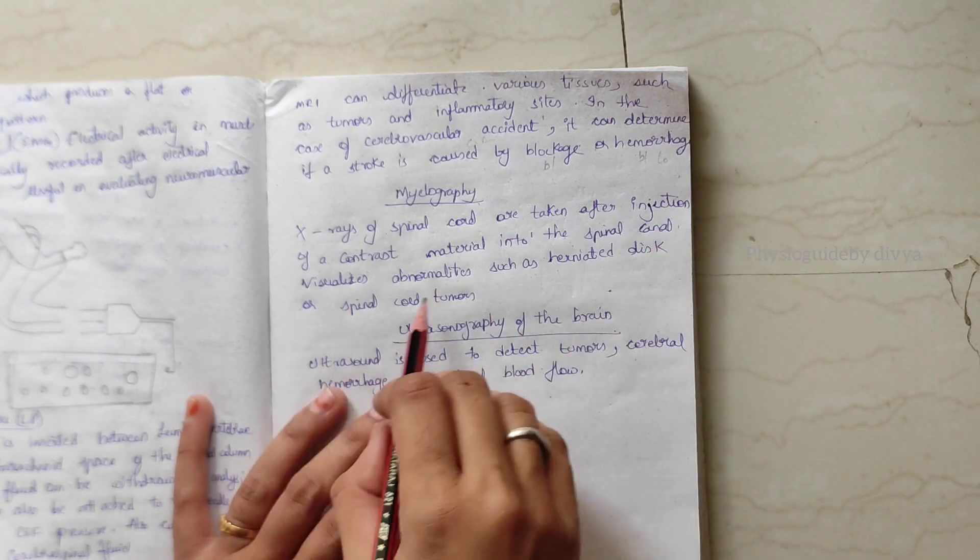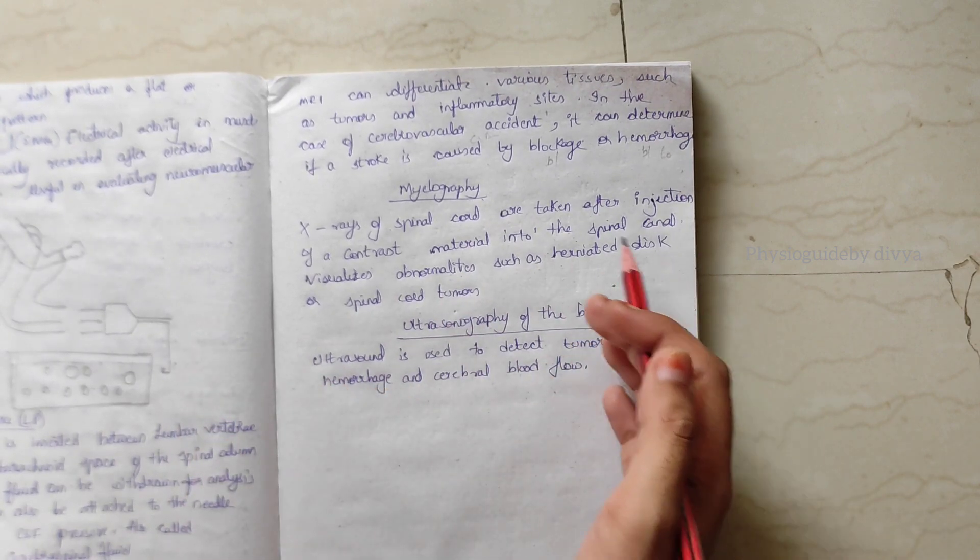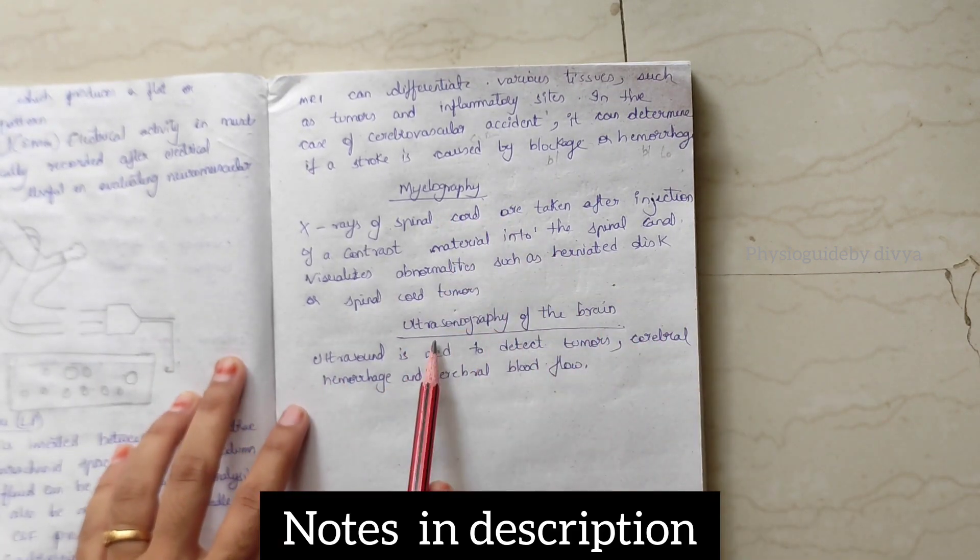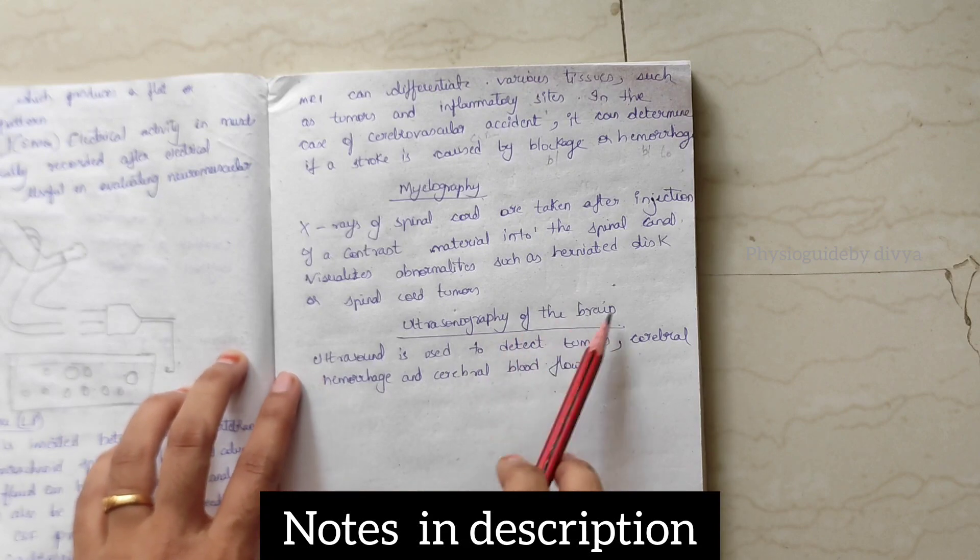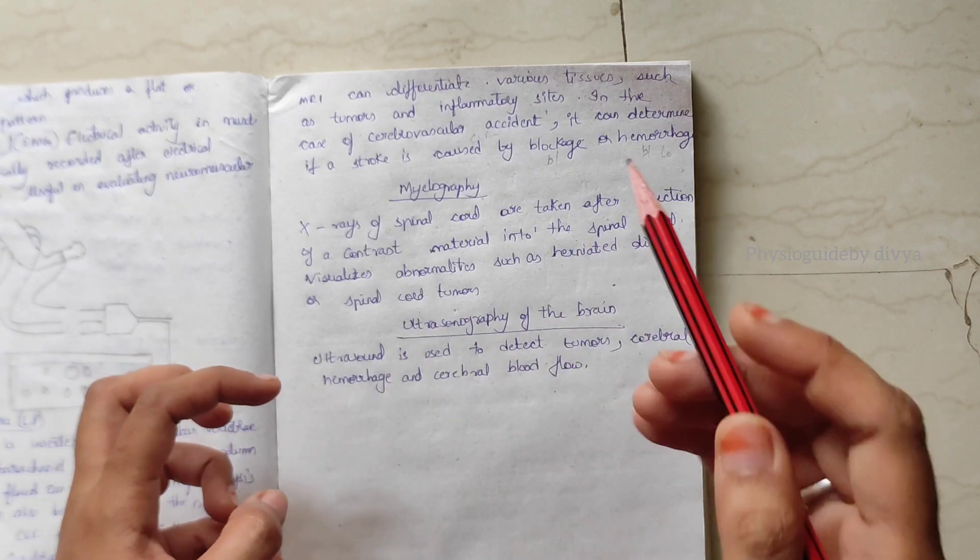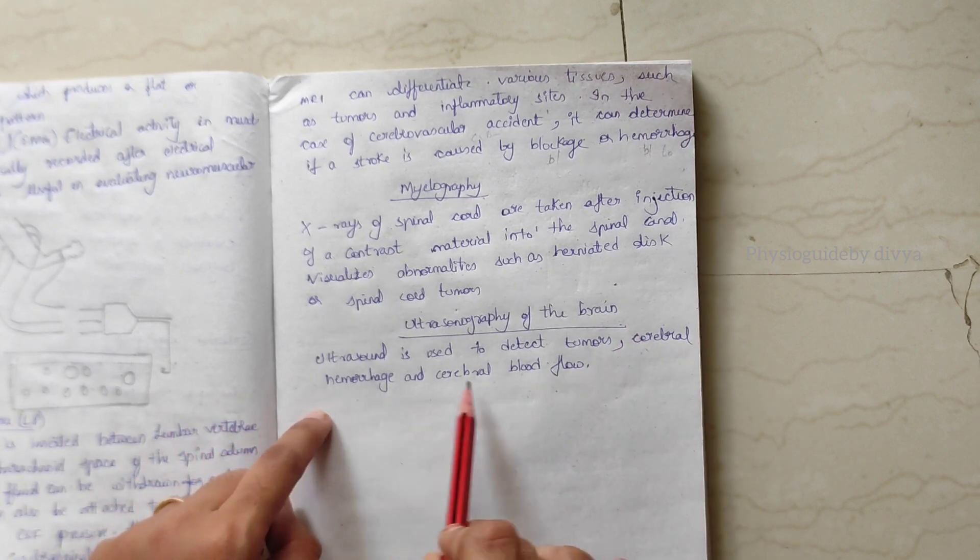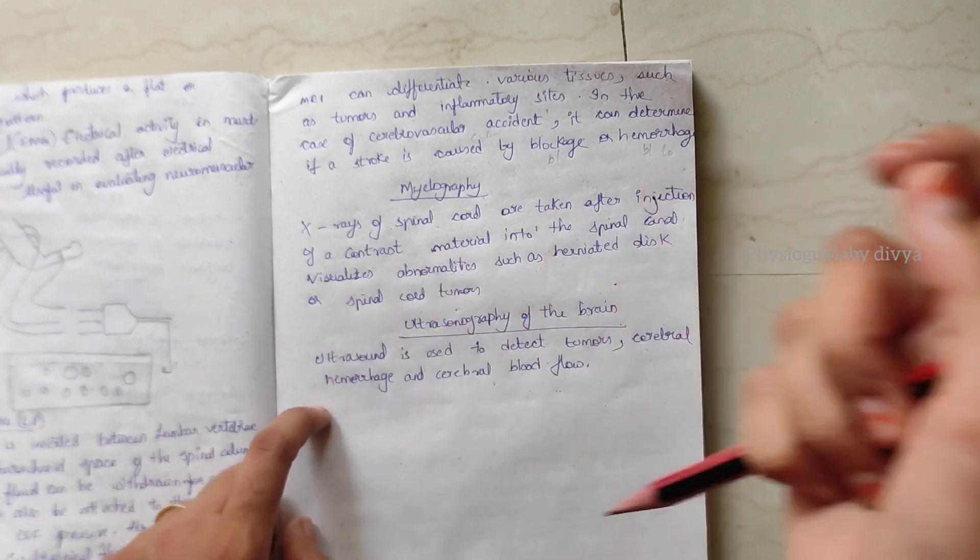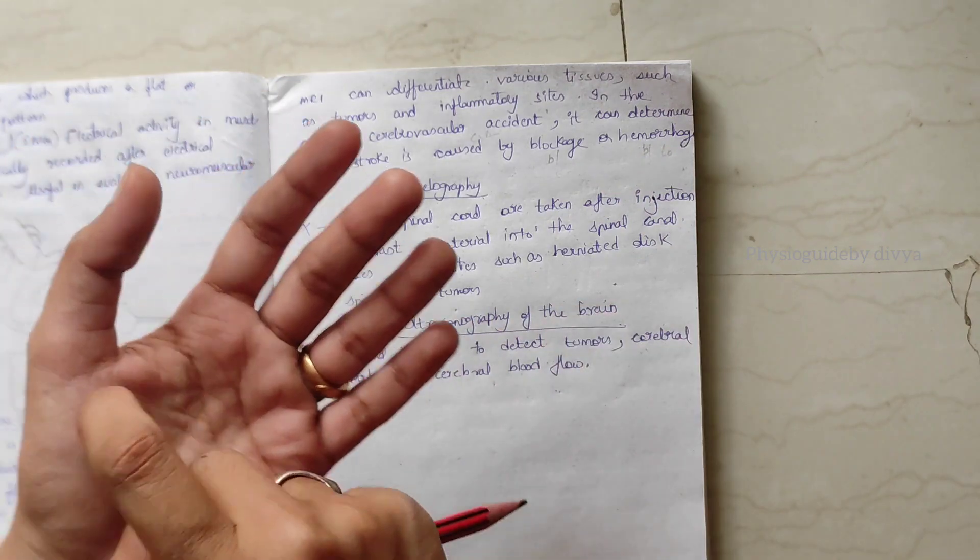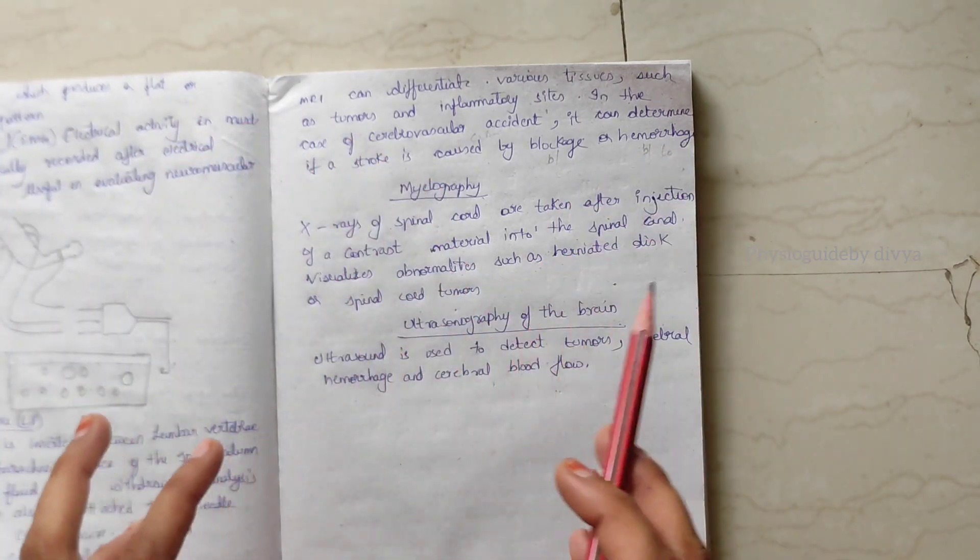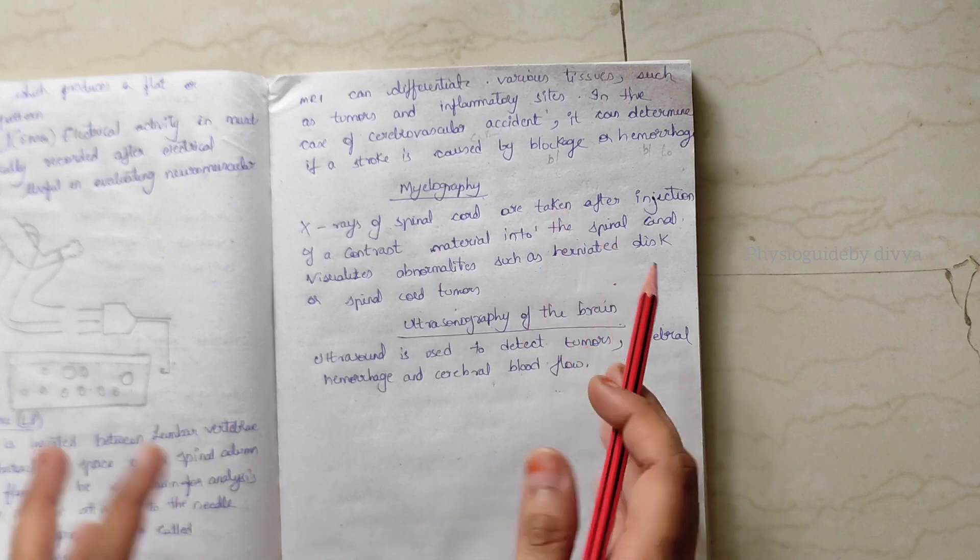Ultrasonography of the brain. Ultrasound is used to detect tumors, cerebral hemorrhage, and cerebral blood flow. A probe is placed on the head and ultrasound is visualized with the help of the ultrasound machine.